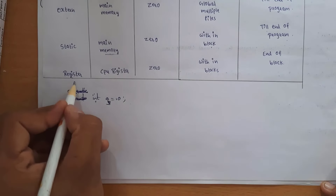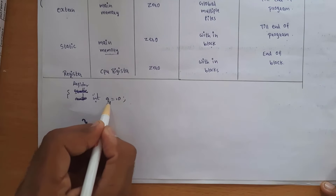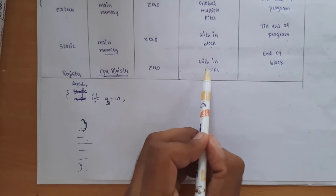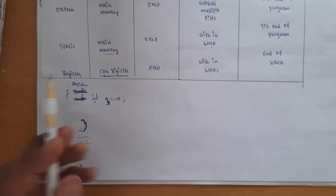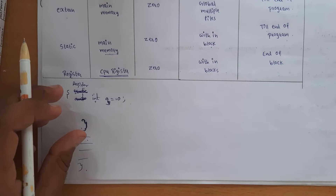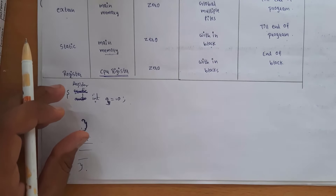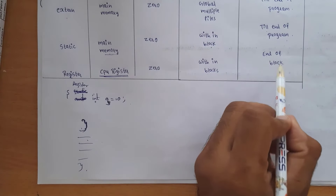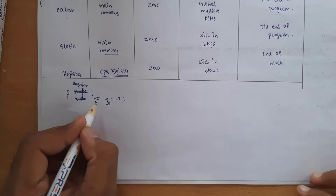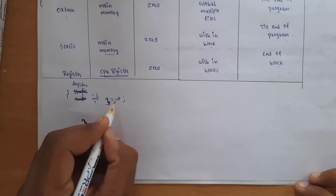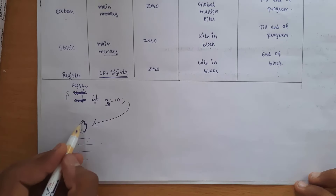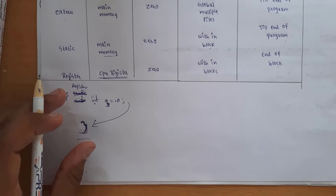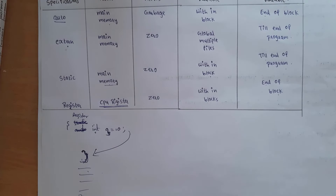For register: if you declare register, the variable a is stored in the CPU register. The scope is within the block — you can access this variable only within this block. The lifetime is until the end of the block, from the point of variable declaration to the closing of the block.